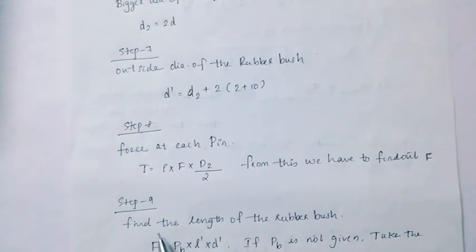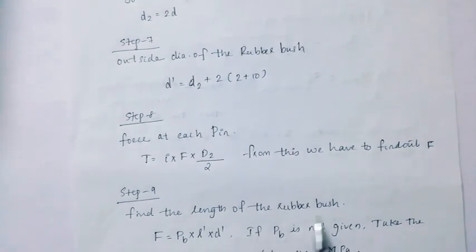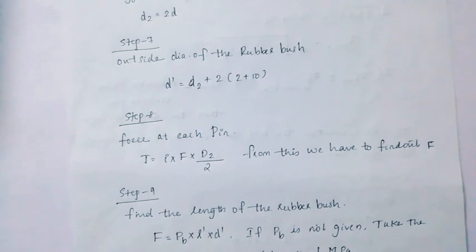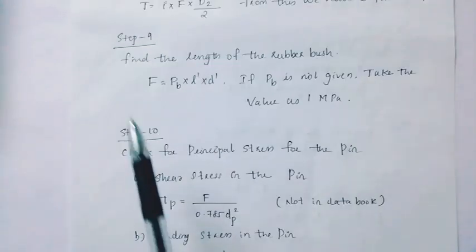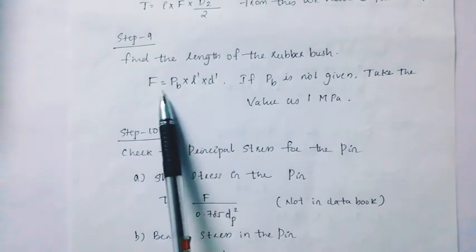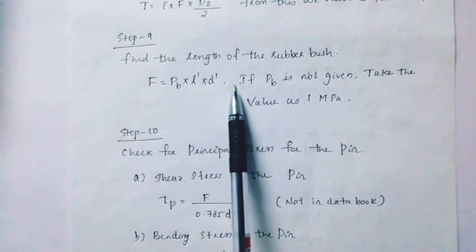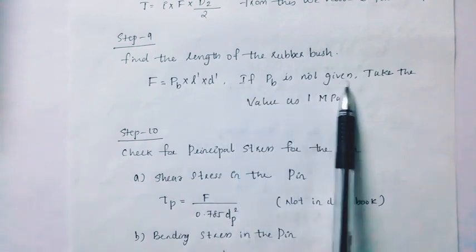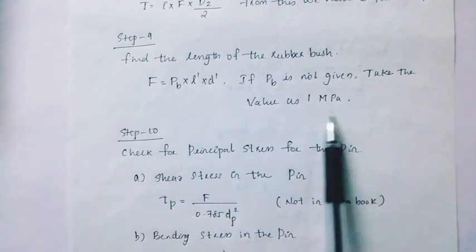Step 9: Find the length of the rubber bush. F is equal to pb into l dash into d dash. If pb is not given, take the value as 1 megapascal.